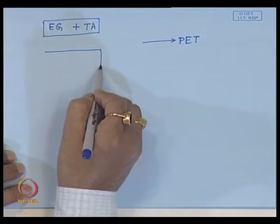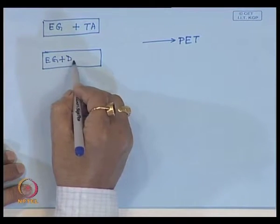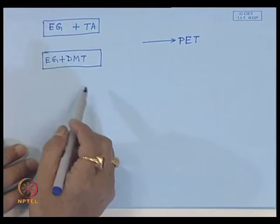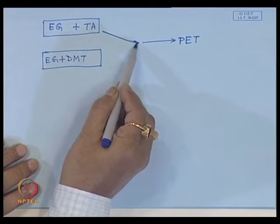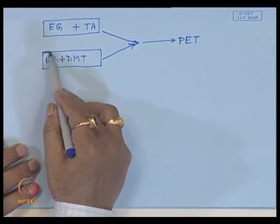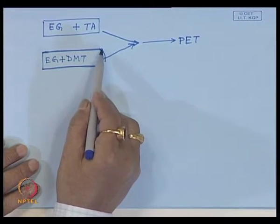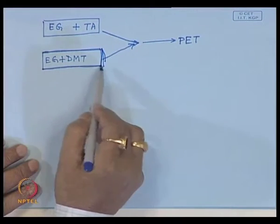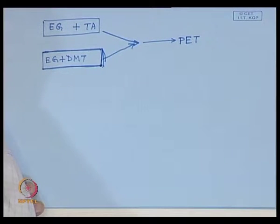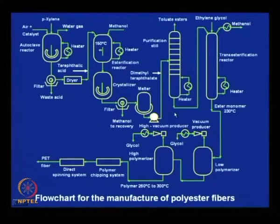Polyethylene terephthalate can be made from ethylene glycol and dimethyl terephthalate - both these can lead to polyethylene terephthalate. This DMT route is actually the most accepted technique. Here it shows the DMT route. Till this point, this step shows the formation of dimethyl terephthalate.